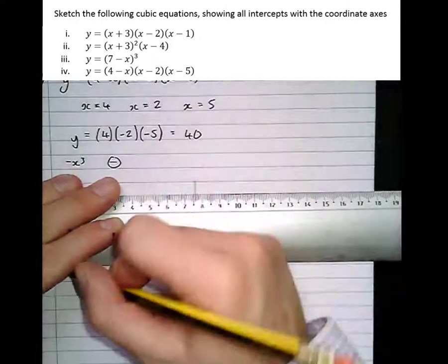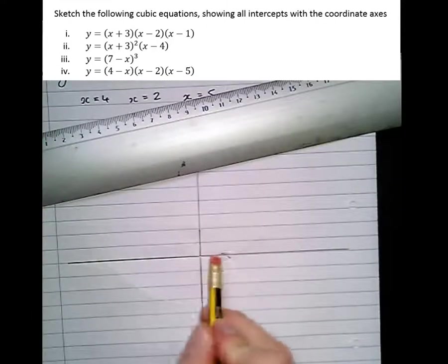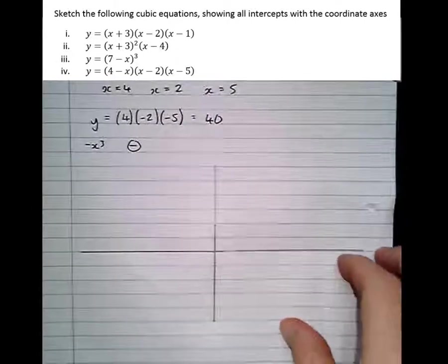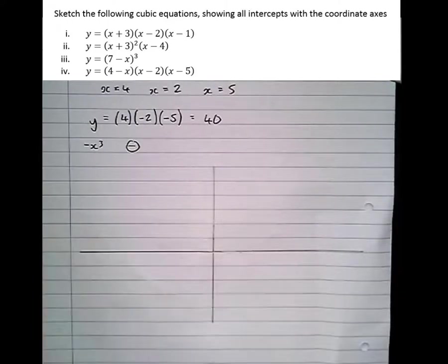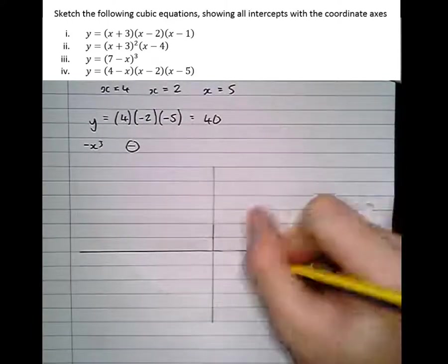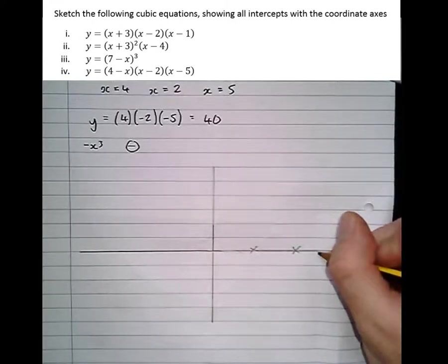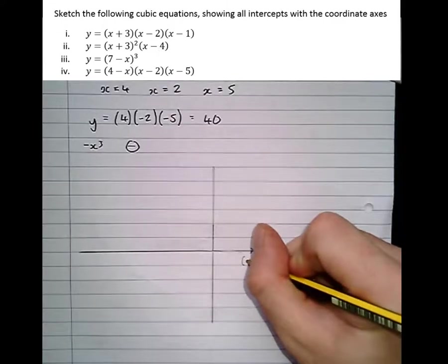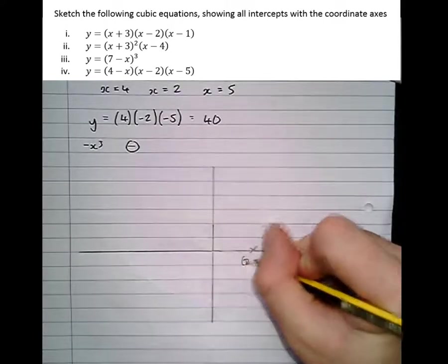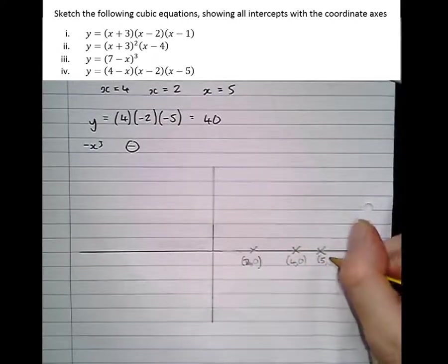So we see there's no double or triple roots here. Should be a nice straightforward one to draw. So the 3 roots occur at 4, 2, and another one at 5. So we've got 2, 0, 4, 0, and 5, 0.